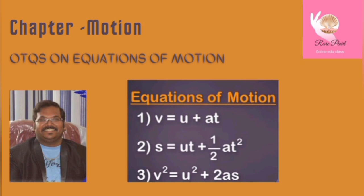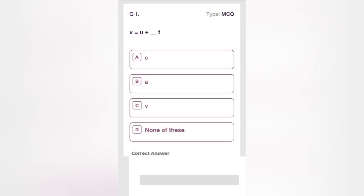In this video I am going to discuss various objective type questions on equations of motion. There are three equations of motion: v = u + at, s = ut + ½at², and v² = u² + 2as, where v is final velocity, u is initial velocity, a is acceleration, t is time, and s is displacement. Let's start the objective type questions.